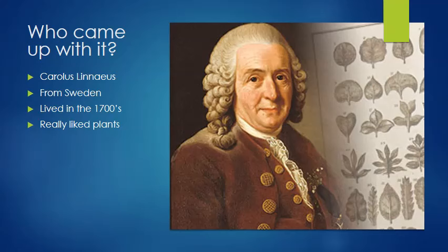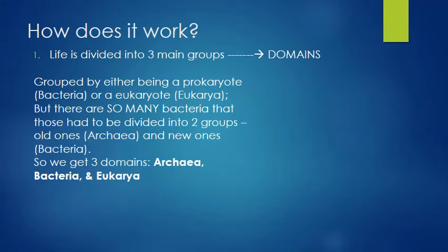It wasn't perfect - he actually included some categories for like mythical animals that did not exist, and eventually that got taken away. People have been deciding and changing it around a little bit, but the basis is still the same. So this is how it works: they took all of life and they decided that life was going to be divided into three main groups, and we call those groups domains.